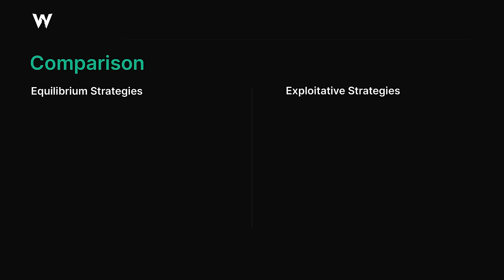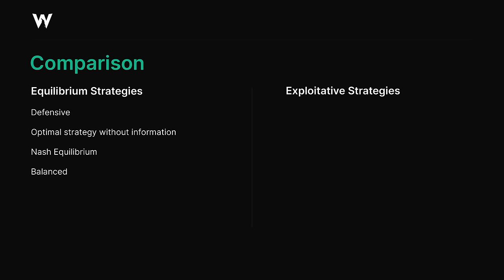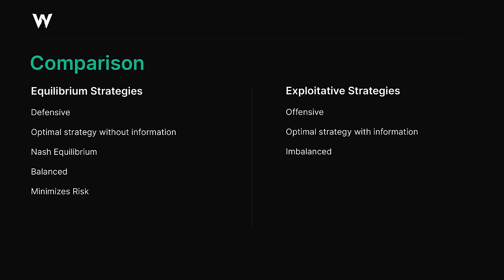We've been using terms like equilibrium and exploitative, so let's break those down. An equilibrium strategy is, at its heart, defensive — the optimal strategy without information on your opponents, defined as a Nash equilibrium balance strategy that minimizes the risk of exploitation. An exploitative strategy, on the other hand, is offensive. It's the optimal strategy with information about how your opponents play, and it is imbalanced. This type of strategy can maximize profit by capitalizing on your opponent's mistakes, but it carries a risk of counter-exploitation — meaning it might backfire.